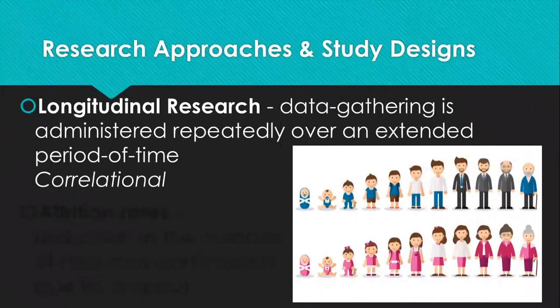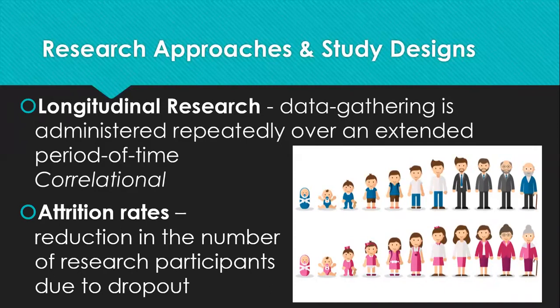Two more designs are used in developmental psychology. The longitudinal research design gathers data by repeatedly testing people over a large amount of time — studies that can last 10, 15, or even 20 years, starting with participants in childhood and checking in every few years to observe changes in thoughts or behavior. While this is one of the best ways to study human development, a key issue is attrition rates — the reduction in participants due to dropout, also called mortality, whether from disinterest, moving away, or death.